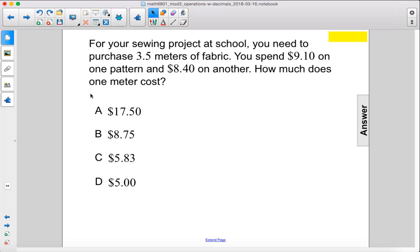For your sewing project at school, you need to purchase 3.5 meters of fabric. You spend $9.10 on one pattern and $8.40 on another. How much does one meter cost?